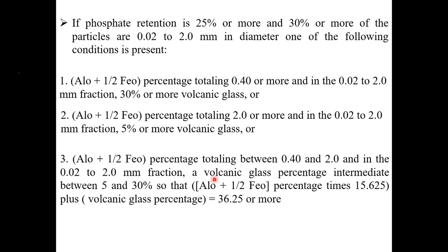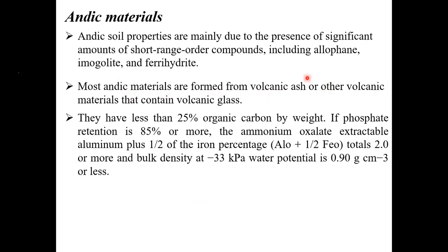Volcanic glass percentage is 5 to 30 percent. Aluminum oxides plus one-half iron oxides percentage combined is around 0.4 to 2.3. Including all volcanic ashes, aluminum fractions, and mineral fractions, you get around 32-36.25 total percentage. The thumb rule: andic material is completely volcanic ash material. If you get any question regarding volcanic ash, you can directly say that material belongs to the andic material.